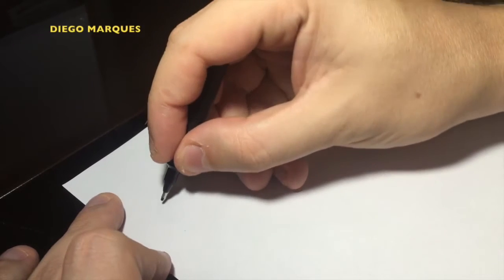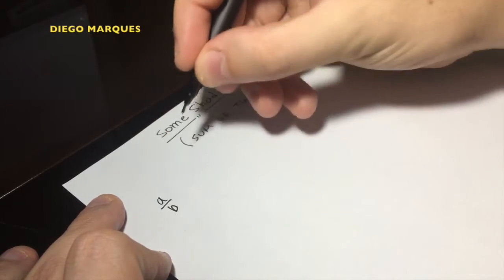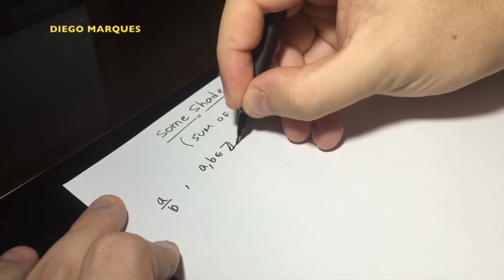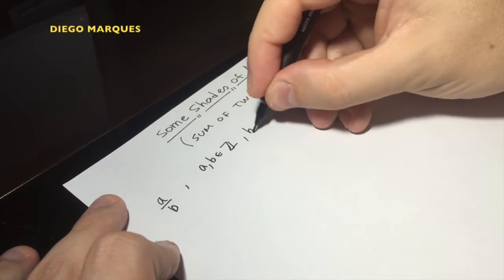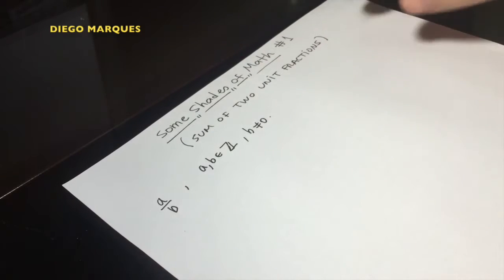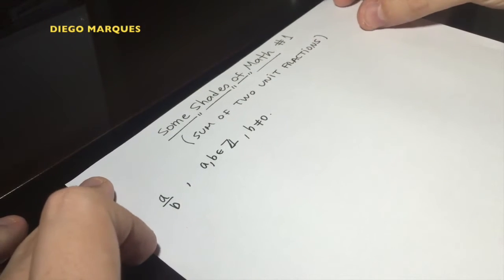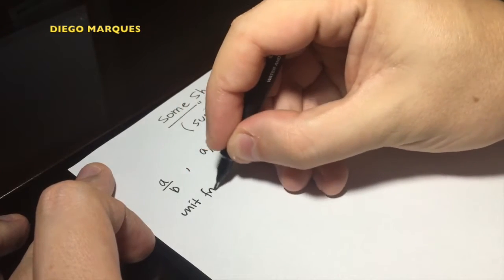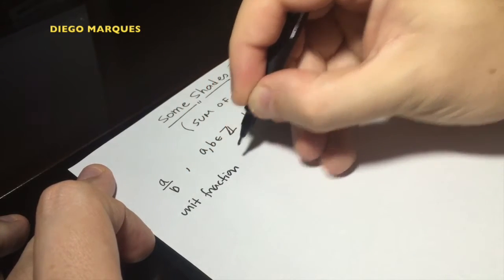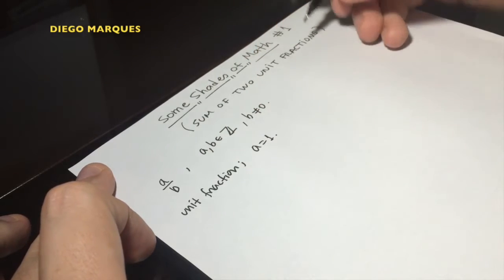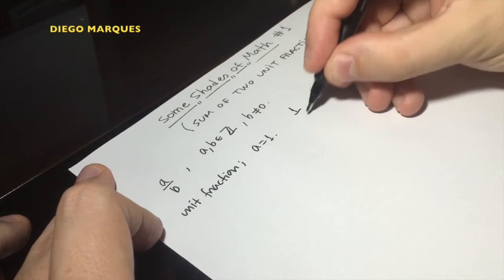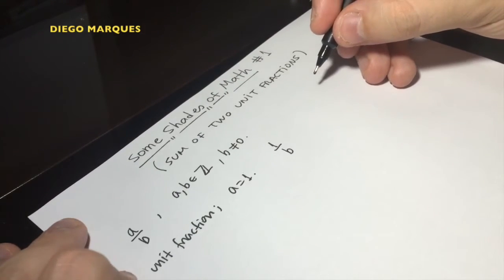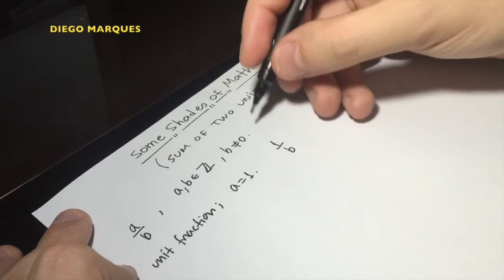Okay, so the first thing is what is a fraction? A fraction is a number of the form a over b where a and b are integers, with b different from zero. So what's a unit fraction? A unit fraction is a fraction such that a is equal to 1.